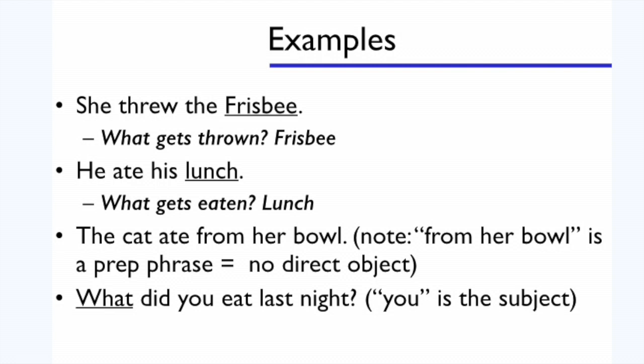In the second sentence, he ate his lunch. No prep phrases. He is the subject. What is he doing? He ate. And now change the verb into a question. What gets eaten? The lunch. I found that taking the verb and making it into a question is one of the easiest ways to get to the direct object.